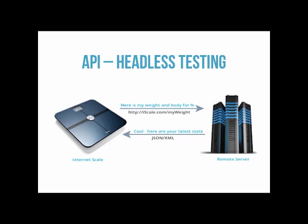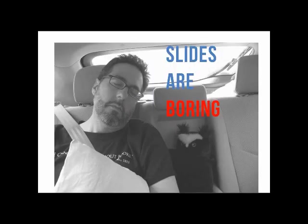So first, let's look at what we mean by API headless testing. In this example, I have an Internet scale that consumes a web service on a remote server. To communicate, it uses HTTP to make a request, sending information like weight or body fat. The remote server performs calculations and sends a response back, usually in JSON or XML format. One of the better solutions for testing APIs is HP's Unified Functional Testing with their API test type — it can help you test all kinds of headless technologies.